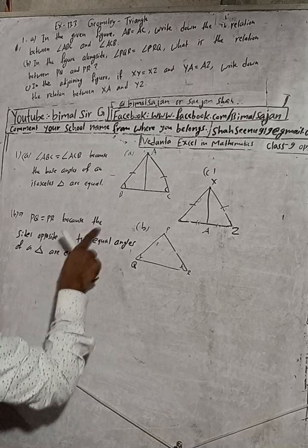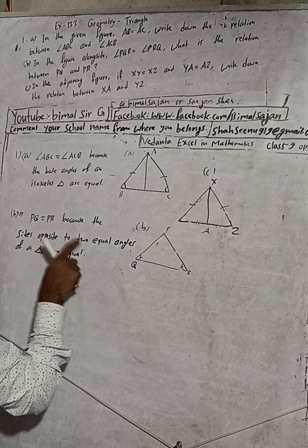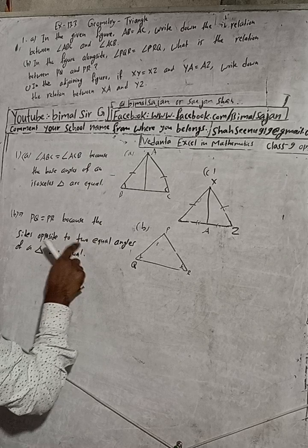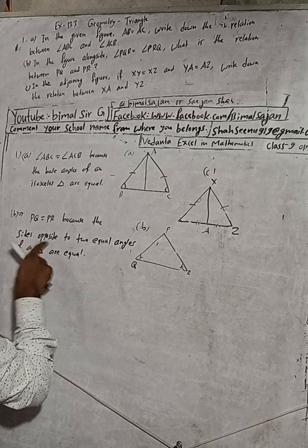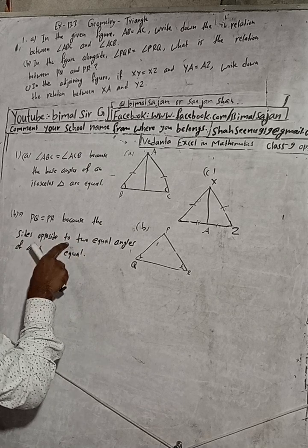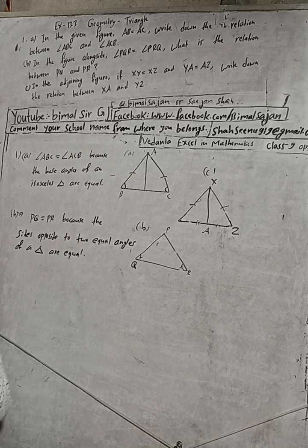Because the sides opposite to two equal angles of a triangle are equal. Now figure number 1C is there.